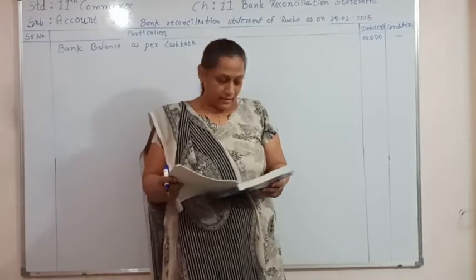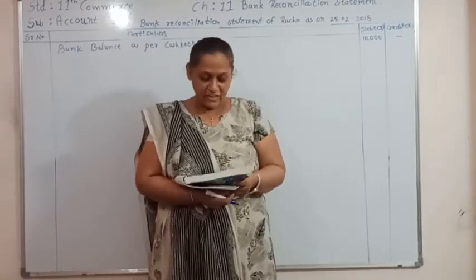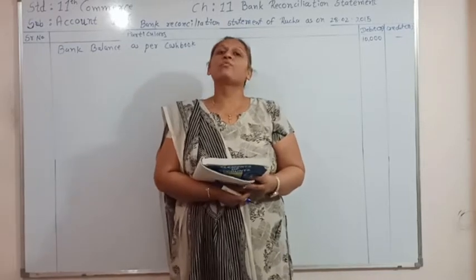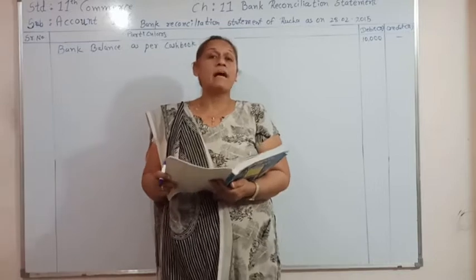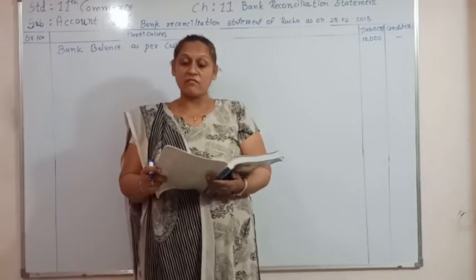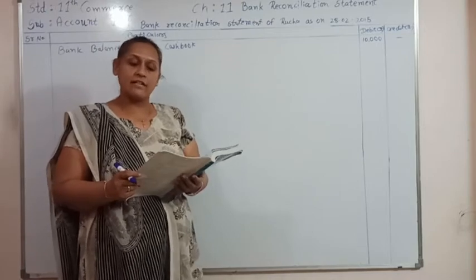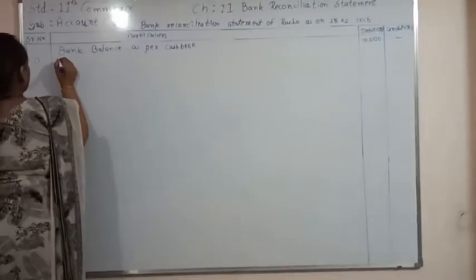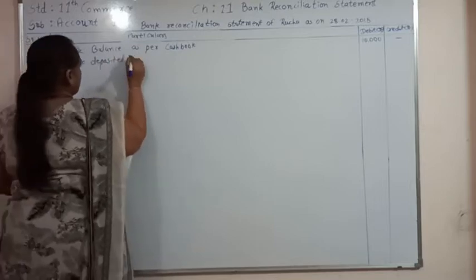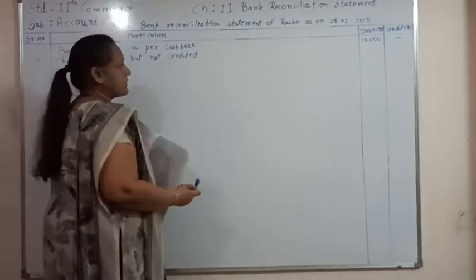Here they are asking us to prepare a bank reconciliation statement and reconcile the transactions. Cheques of ₹10,000 were deposited with bank, out of which cheques of ₹4,000 are credited in bank till 28/2/15. So cheques of ₹6,000 are not credited in bank. We are going to credit these in the bank reconciliation statement. First transaction: cheques deposited but not credited — ₹6,000.